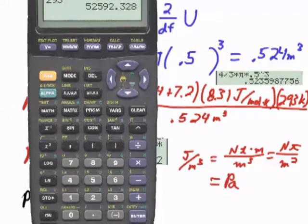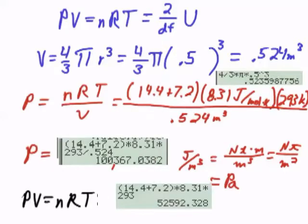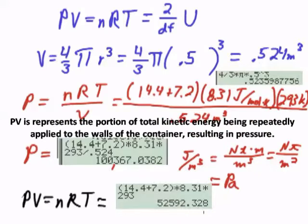And hit enter. And we've got our nRT equals PV equals 52,592. This is in joules.